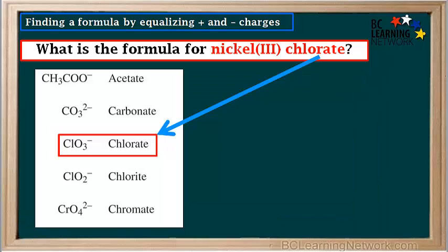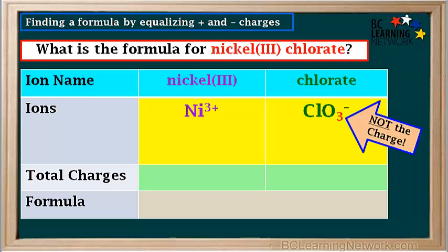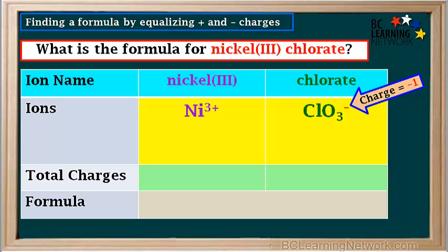The negative ion in this compound, chlorate, is found on the table of ions. Its formula is ClO3-. It's a polyatomic ion, so we treat it like a single unit. Make sure you don't get chlorate and chlorite mixed up — their endings are very close, so pay very close attention. Remember, the charge is on the top right of the formula. The subscript 3 at the bottom is not the charge — it simply tells us that a chlorate ion has three oxygen atoms. It's the sign on the top right that is the charge, which for chlorate is negative one.